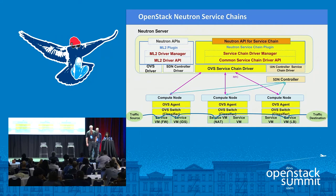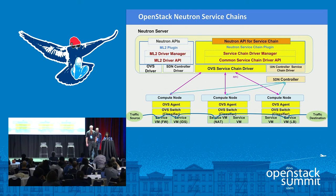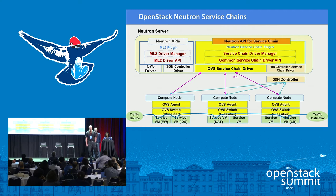The northbound API handles CRUD requests for port chain, port pair group, port pairs, and flow classifier resources. Port chain parameters allow you to select symmetric chains or specify the encapsulation type used in the data plane. The architecture has the northbound API interfacing with the Tacker driver, below which is the Neutron service chain plugin manager with pluggable backend drivers. At the bottom are compute nodes with actual chaining through an OVS switch.